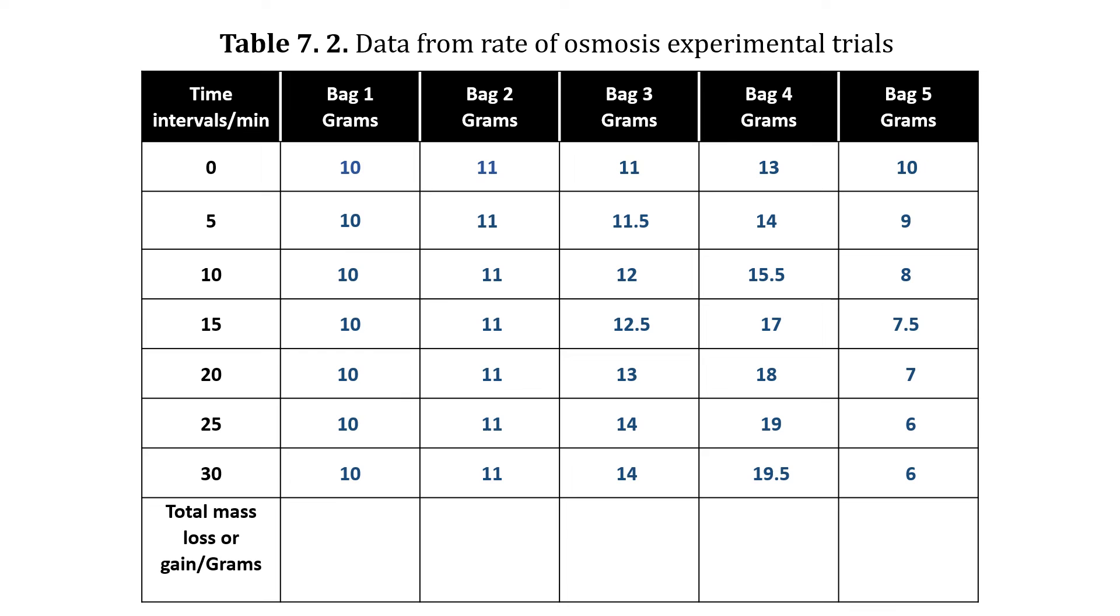Now let's calculate the total mass loss or gain. This is straightforward. Simply subtract the initial mass from the final mass for each bag. Here is what we found. Bag one and bag two show no change in mass as they were submerged in an isotonic solution. Bag three gained three grams, and bag four gained 6.5 grams, which aligns with our earlier predictions since these bags were in hypotonic solution. Finally, bag five lost four grams as it was submerged in a hypertonic solution.